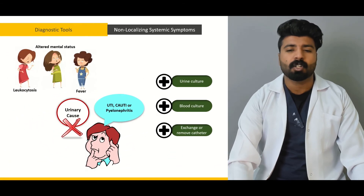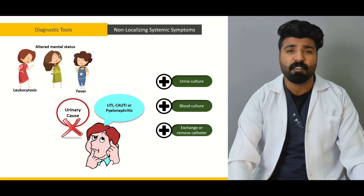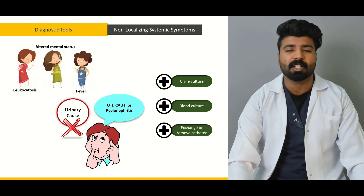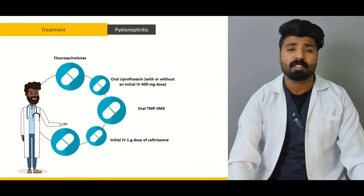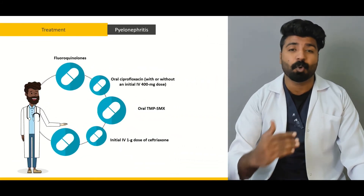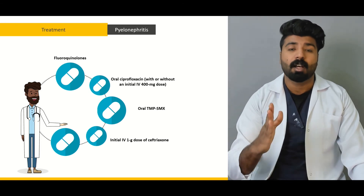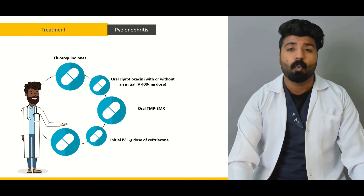Next, we're going to talk about non-localizing systemic symptoms such as leukocytosis, altered mental status, and fever. We'll discuss whether to go for blood cultures, urine cultures, or whether to exchange or remove catheters if the patient has one. So if non-specific symptoms are present, we first take the history, then perform the examination, then use diagnostic modalities, and once we've done all of that we go for treatment options.